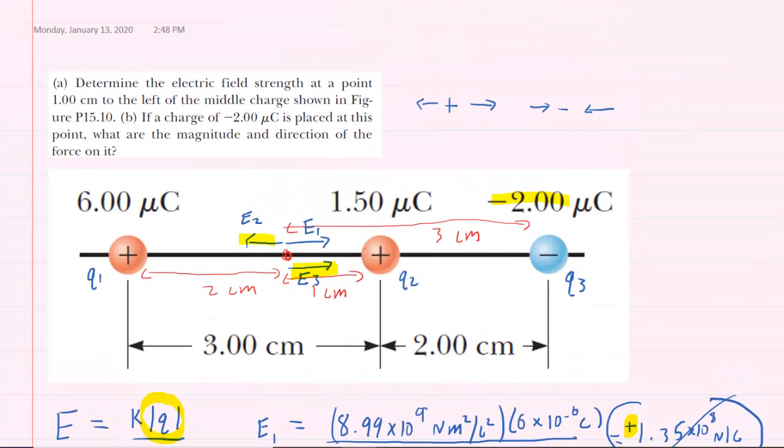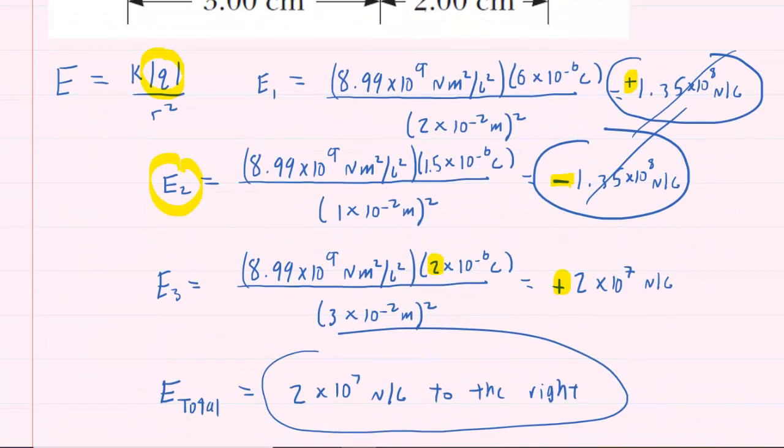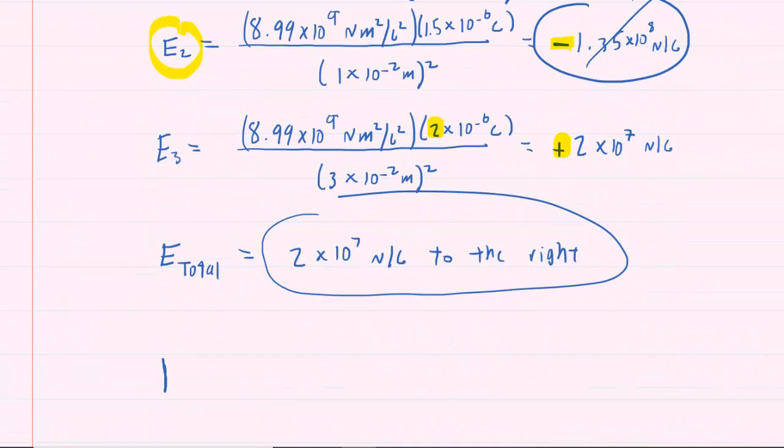In part B, we were asked to place a negative 2 microcoulomb charge at that exact point right there, and then figure out the magnitude and direction of the force on it. So we recall that the electric force on a charge that is placed in a field is equal to the magnitude of the field times the magnitude of the charge.